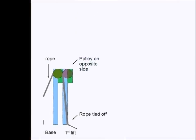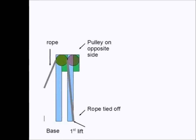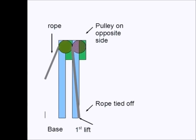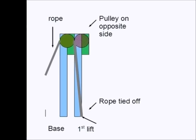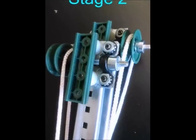Next, we add a second stage, identical to the first, with the exception that the pulley is on the opposite side. A rope is passed over the first pulley and tied to the bottom of the second stage. Here is a picture of the first and the second stage together.